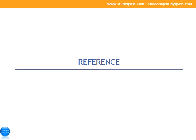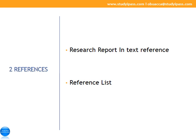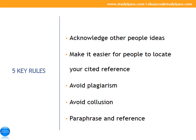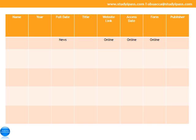Let's discuss the reference. You need to perform two activities: first, the in-text reference in the research report, and second, the reference list. Not doing it well will lead to being cited for plagiarism. BPP has recommended the Harvard referencing system. My five rules you must follow are: acknowledge other people's ideas, make it easier for people to locate your cited reference, avoid plagiarism, avoid collusion, and paraphrase and reference. One key thing to ensure you pass the reference component is to prepare a reference worksheet.